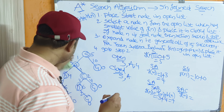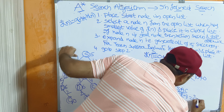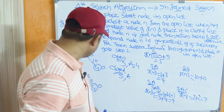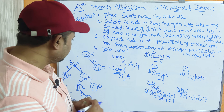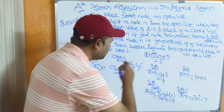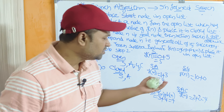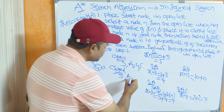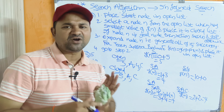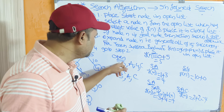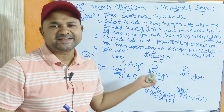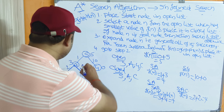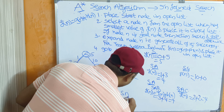Out of 7 and 4, the minimum value is 4, which corresponds to C. So C is placed in the closed list as the best node, and the best path so far is S → A → C.